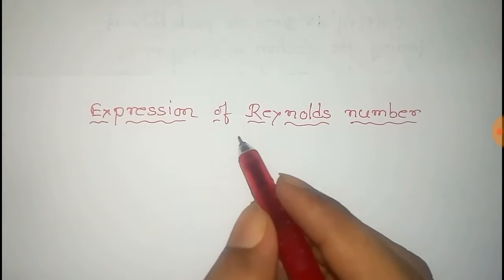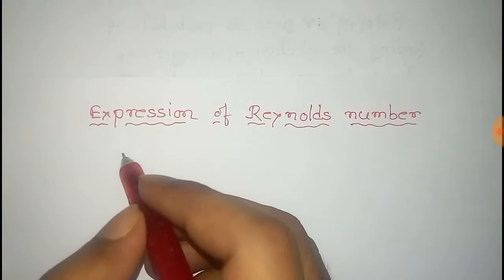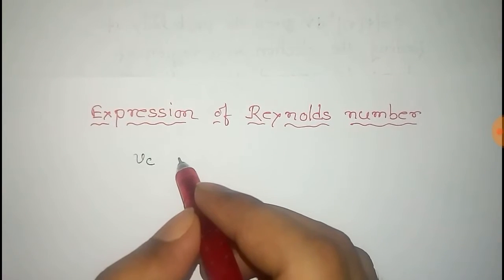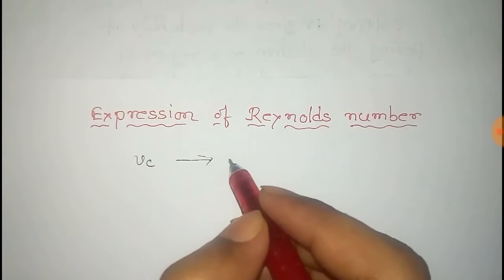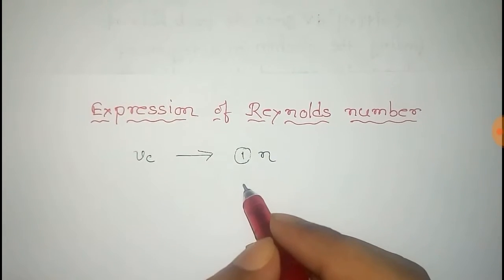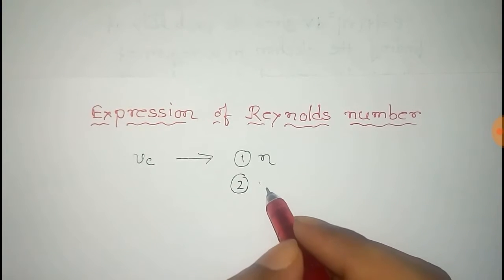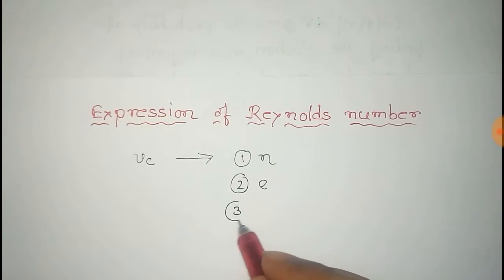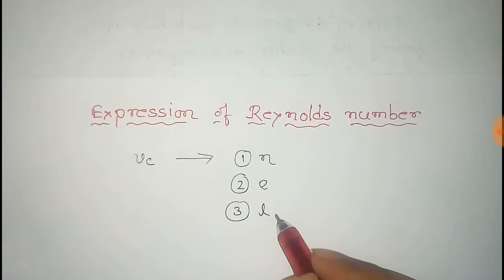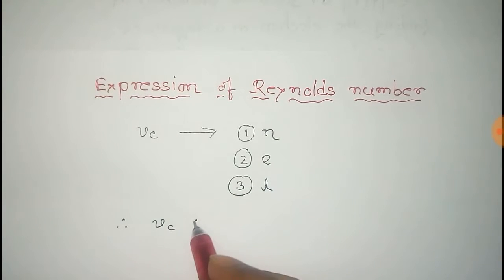In this video we'll find the expression of Reynolds number experimentally. It has been observed that the critical velocity of a fluid depends on the following factors: first, the coefficient of viscosity eta; second, the density of the fluid rho; and third, the length of the tube through which the fluid flows, that is L.